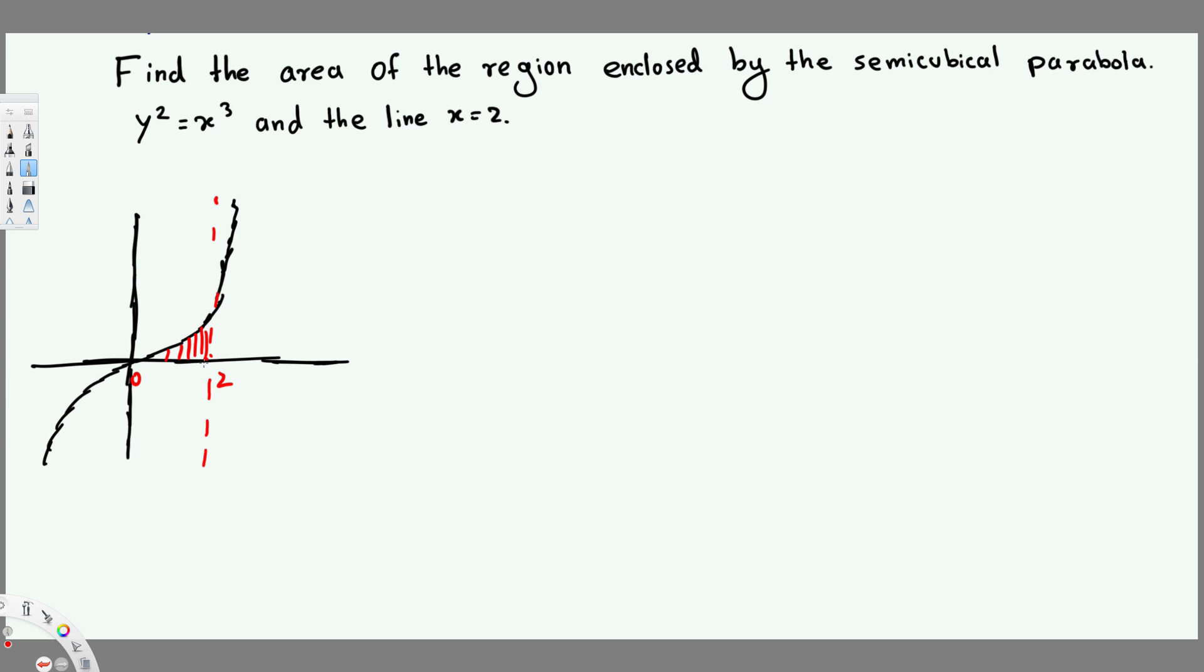This is the region we are interested in. Let's see how we can find this area of this region. So to find the area of this region what we have to do is subtract the bottom function from the top function.